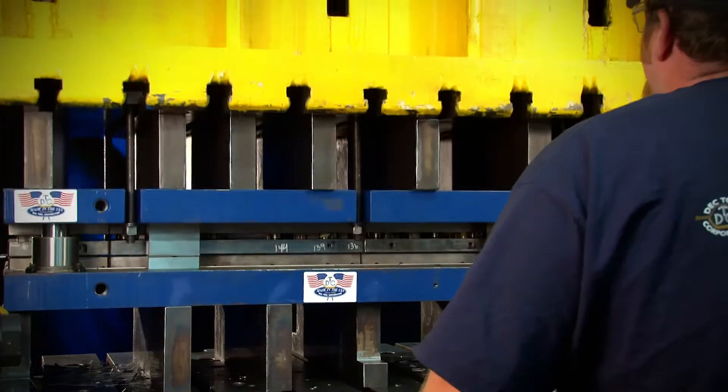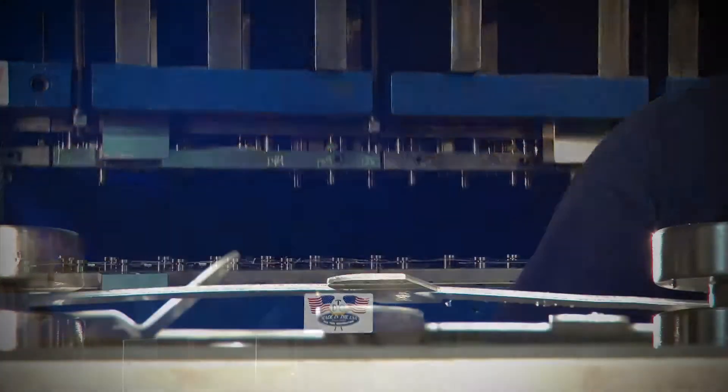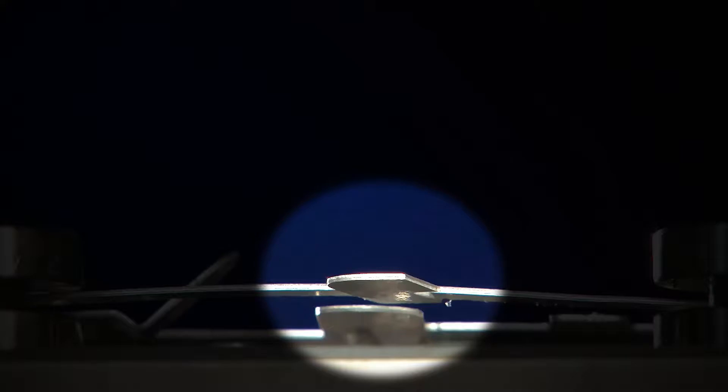During the stamping operation, slugs expand into these precision grooves, which prevents them from pulling back up to the top of the die block and onto the die surface where they can cause damage to the strip, the final part, even to the die itself.